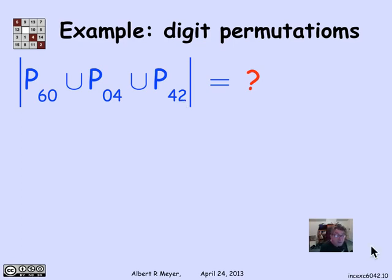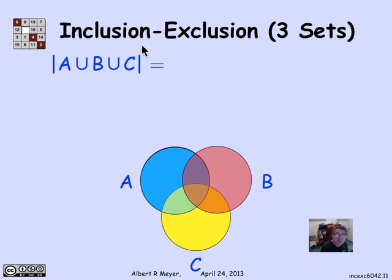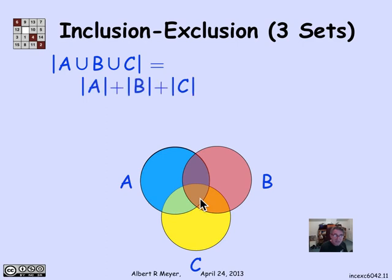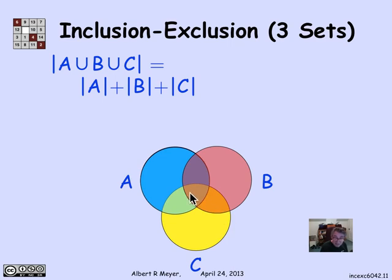To figure this out we need inclusion-exclusion for three sets instead of two, which is slightly more complicated. For three sets A, B, C, a Venn diagram shows all possible overlaps. The formula starts by adding the size of A, the size of B, and the size of C. But that sum counts the lens-shaped region A∩C twice, A∩B twice, and B∩C twice.